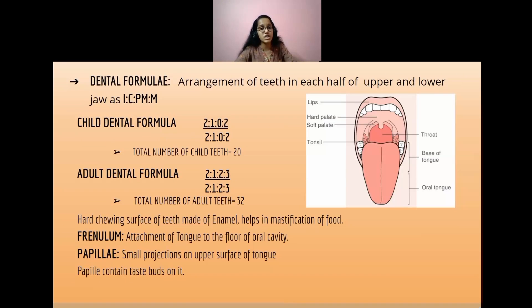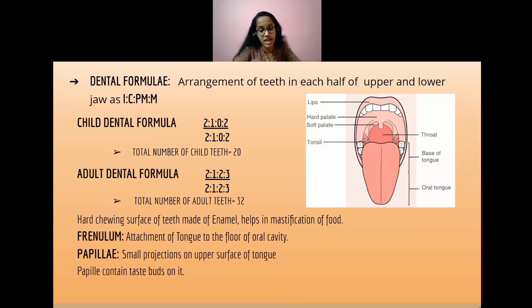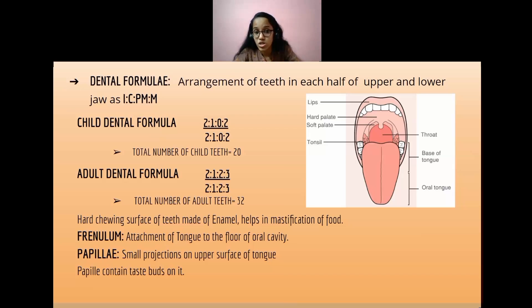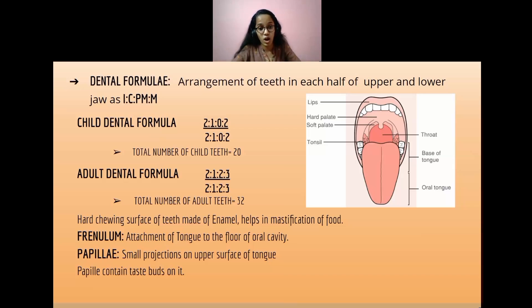The dental formula represents the arrangement of teeth in each half of the upper and lower jaw, written as I:C:PM:M. In a child, the dental formula is 2:1:0:2 / 2:1:0:2. Note that children do not have premolars — this is an important exam question. The total number of teeth in a child is 20.